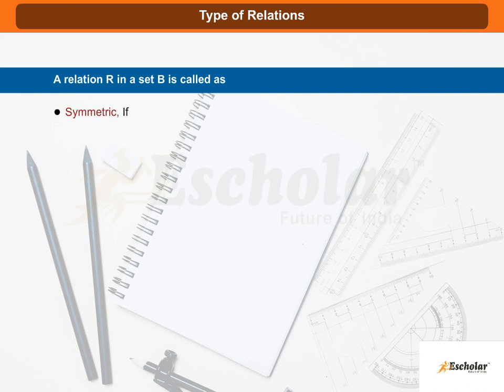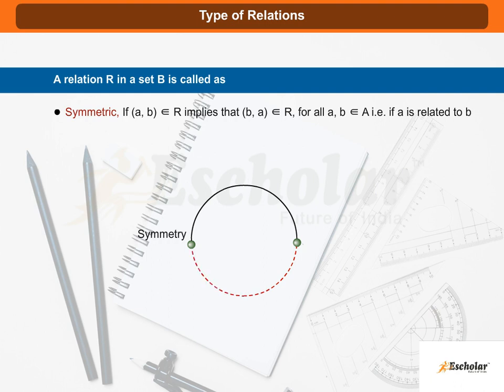Symmetric. If (a, b) belonging to R implies that (b, a) belonging to R for all a, b belonging to A, i.e., if a is related to b, then b is also related to a.